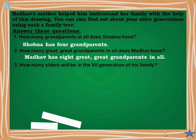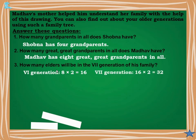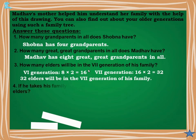Question 3: How many elders will be there in the 7th generation of his family? Each generation multiplies by 2. The 5th generation has 8. The 6th generation: 8 × 2 = 16. The 7th generation: 16 × 2 = 32. Answer: 32 elders will be in the 7th generation of his family.